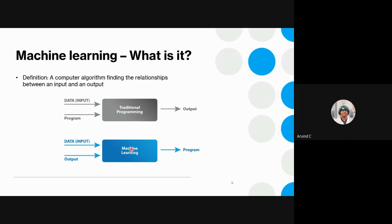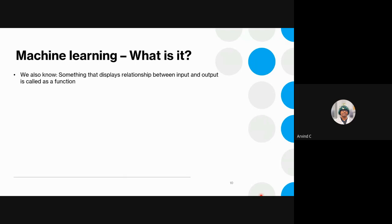Traditionally, we have certain rules and certain inputs — we apply the rules to the input to get an output. For example, a chess pawn can only move forwards one step — that's rule-based input and output. Machine learning works differently: you have a series of inputs and outputs and don't know the relationship between them — machine learning finds exactly that relationship.